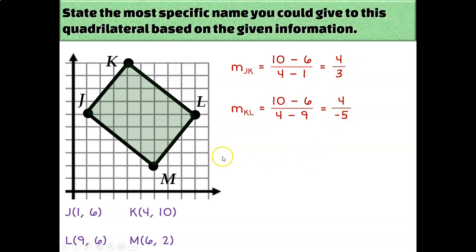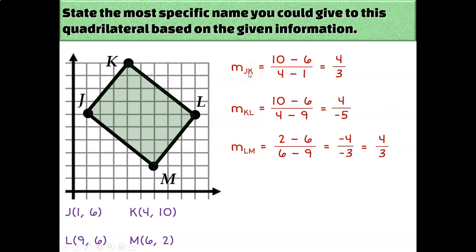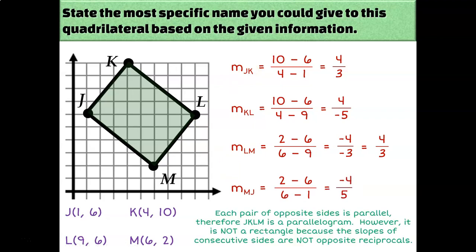Let's prove the same thing for our other two sides. The slope of LM is −4/−3, which reduces to positive 4/3. So LM is parallel to JK. And the slope of JM is −4/5. So we can only conclude so far that this is a parallelogram — it's not a rectangle because consecutive sides did not have opposite reciprocal slopes. The only thing shown is that opposite sides have equal slopes.